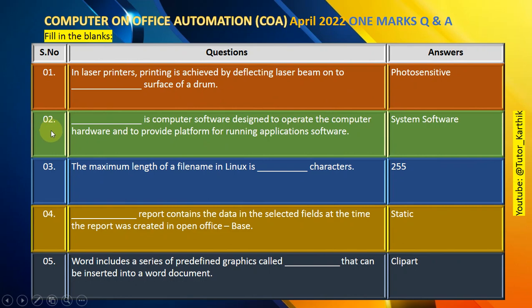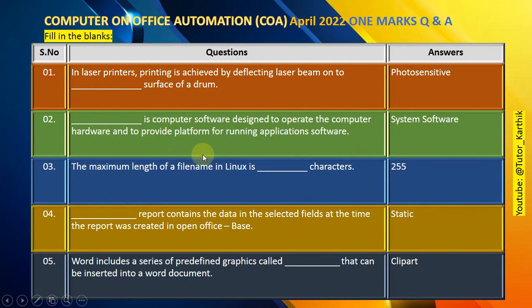Question number 2: System software is computer software designed to operate the computer hardware and to provide a platform for running application software.